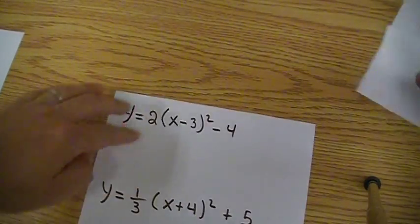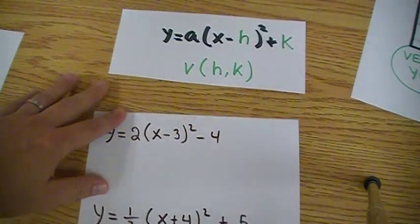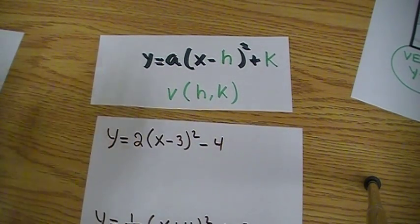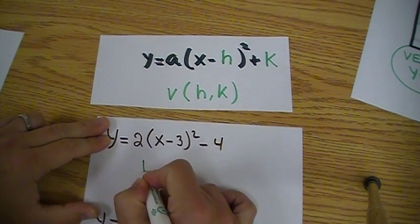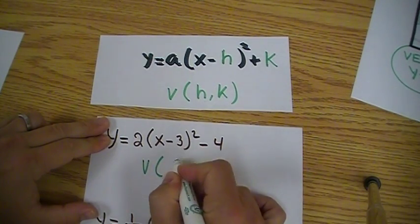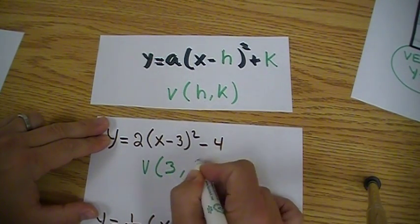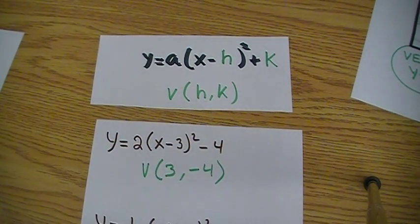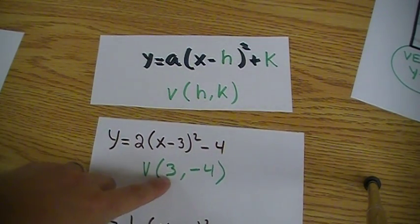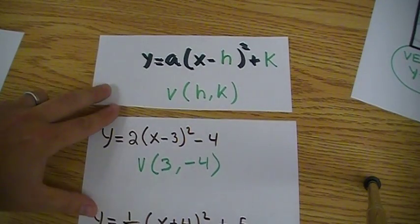For example, if we have y equals 2(x minus 3) squared minus 4, then the vertex is going to be the opposite of this guy, which is 3, and the same as this. We can find out that the vertex will be the x value is 3 and the y is minus 4.